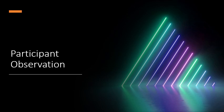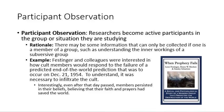Our second type is participant observation. Researchers become active participants in the group or situation they're studying. The reason is that you might not be able to get information unless you're part of the group, especially if you're studying a subversive group, rebels, people who might be violent, or a gang. You might have to participate to really understand it.